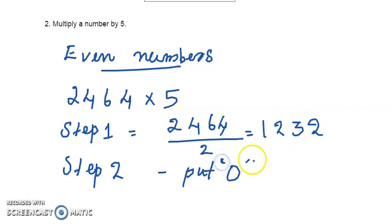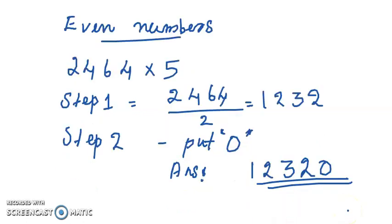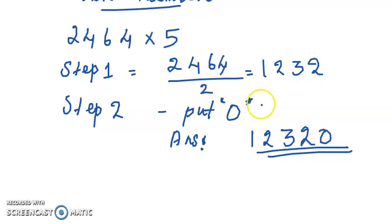After you put 0, what will be the answer? The answer is 12320. If the number is an even number, you just take half of that number and put 0 at the last.